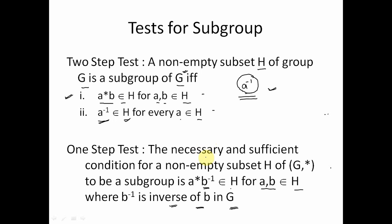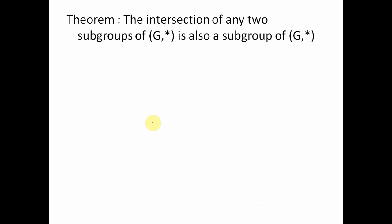For the one-step test, the necessary and sufficient condition for a non-empty subset H of G to be a subgroup is: if a and b belong to H then a * b-inverse must belong to H. One thing to be remembered is that b-inverse is the inverse of b calculated from G. There is also a theorem which says the intersection of any two subgroups of G is also a subgroup of G. Let us say we have two subgroups H1 and H2, which are subsets of G; then the intersection of H1 and H2 will also be a subgroup of G.